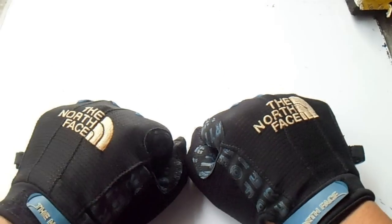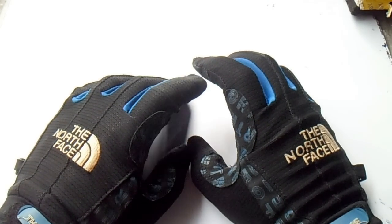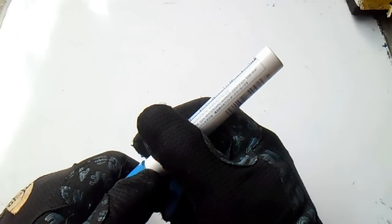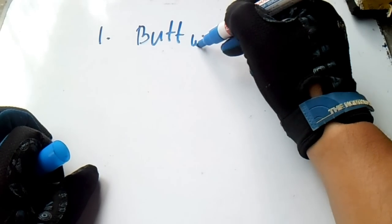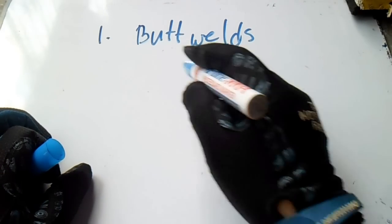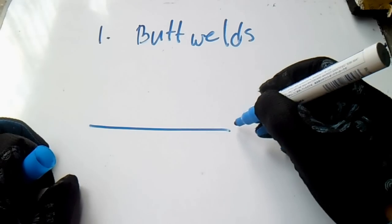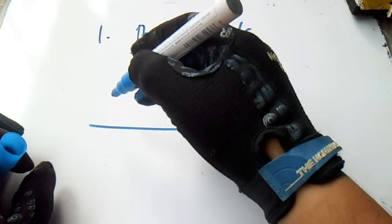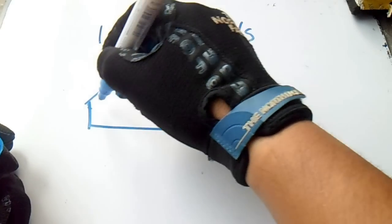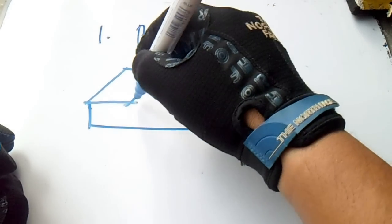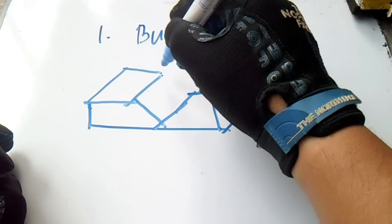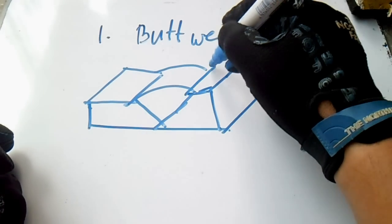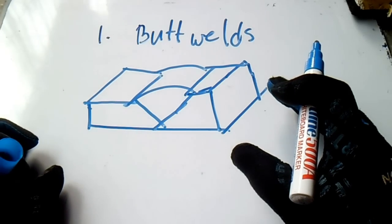Hi guys, welcome to Piping Welding and DP channel. This video is about welding types. We have five types of common welds. Number one is the butt weld — here is the symbol for the butt weld.